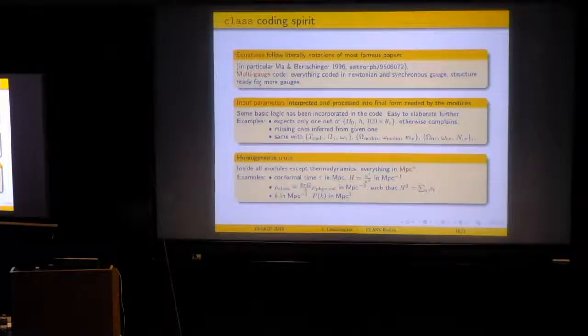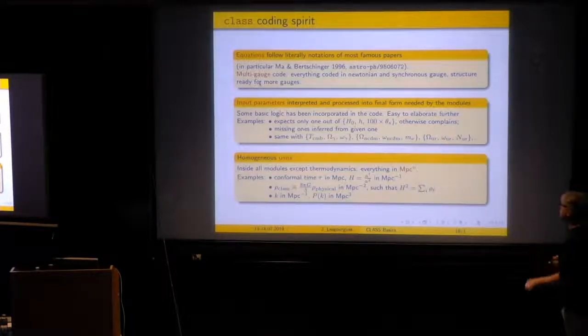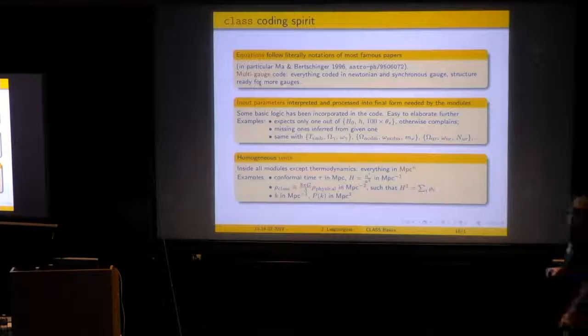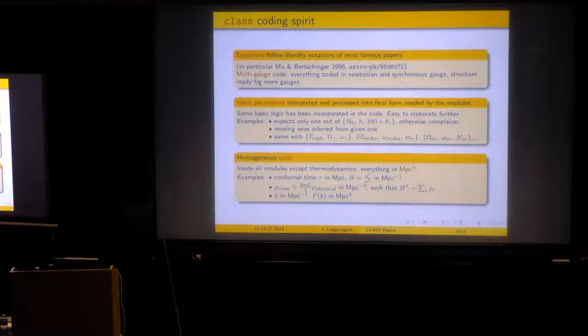And there is just an exception. It's a thermodynamics module, because in the thermodynamics module, we took quantities from other codes, like RECFAST. And these other codes had their own choice of units. We did not modify it. But apart from this, everything is written by us and with convention of megaparsec to some power. So for instance, you can realize very quickly that the conformal time, tau, can be expressed in megaparsecs, because the conformal time is like a comoving distance. So it's megaparsecs. And the Hubble rate, which in conformal time reads like a prime over a squared, is one over a time, of course. So it's inverse megaparsecs. And then what about densities? Physical density is, of course, in units of, say, grams per centimeter cubed.